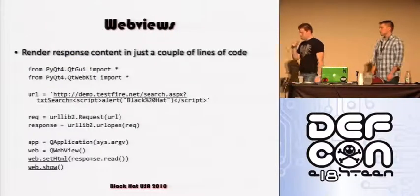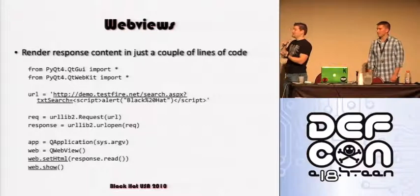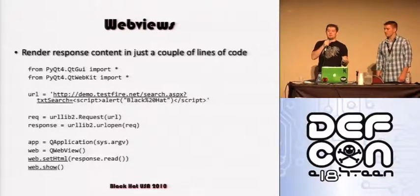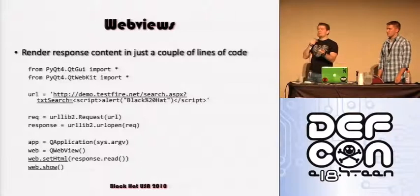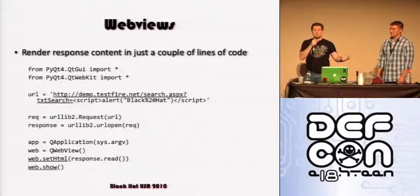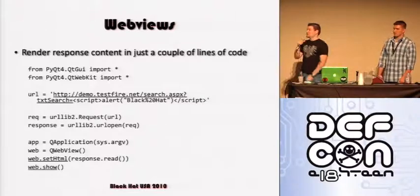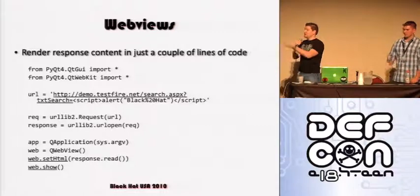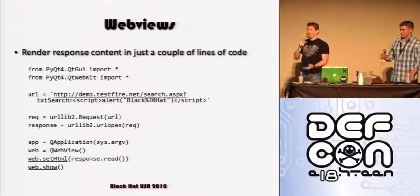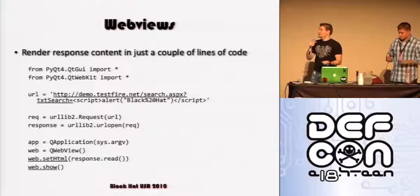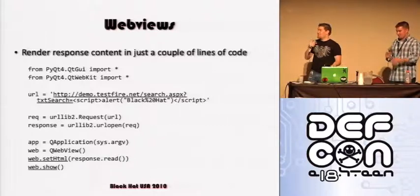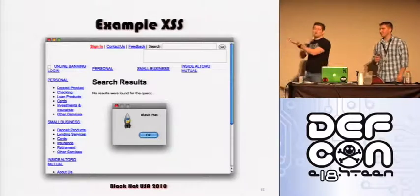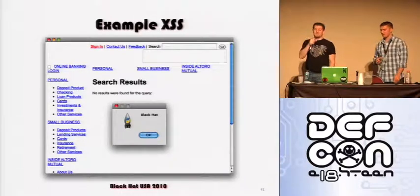One thing I noticed when I first started doing WebKit stuff is you could just call the object and say setHTML. Here's an example of using PyQT in just a couple lines of code and doing a test for cross-site scripting. Cross-site scripting is one of those things that's nice to see a rendered response — sometimes it's just easier to see that. We have our URL, our request, the web object's setHTML call, and then tell it to show. On the next page, you can see that once it renders, it's very easy to see that it was vulnerable to cross-site scripting.